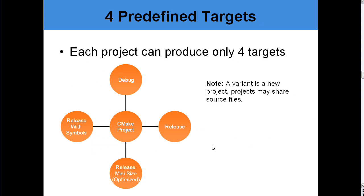CMake provides four predefined targets. Each project can produce only four targets: Debug, for debugging and development; Release; Release with symbols; and Release optimized. You can have any set of optimizations associated with this target.